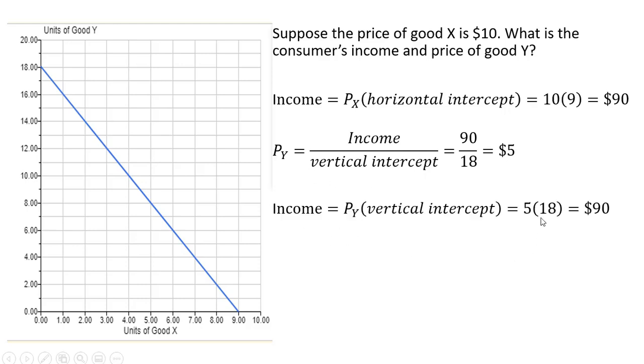You'll also note if we take $5 and multiply it by 18, that gives us the consumer's income of $90.